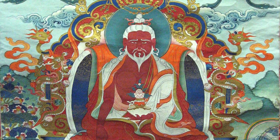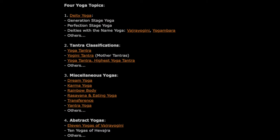With yoga, we really have four topics. The four topics are: first, Deity Yoga; second, Tantra Classification; third, Miscellaneous Yogas; and fourth, Abstract Yogas. Deity Yoga is the main meditation practice of Vajrayana Buddhism, and the word yoga is used everywhere in Vajrayana Buddhism. It has two parts: Generation Stage Yoga and Perfection Stage Yoga.